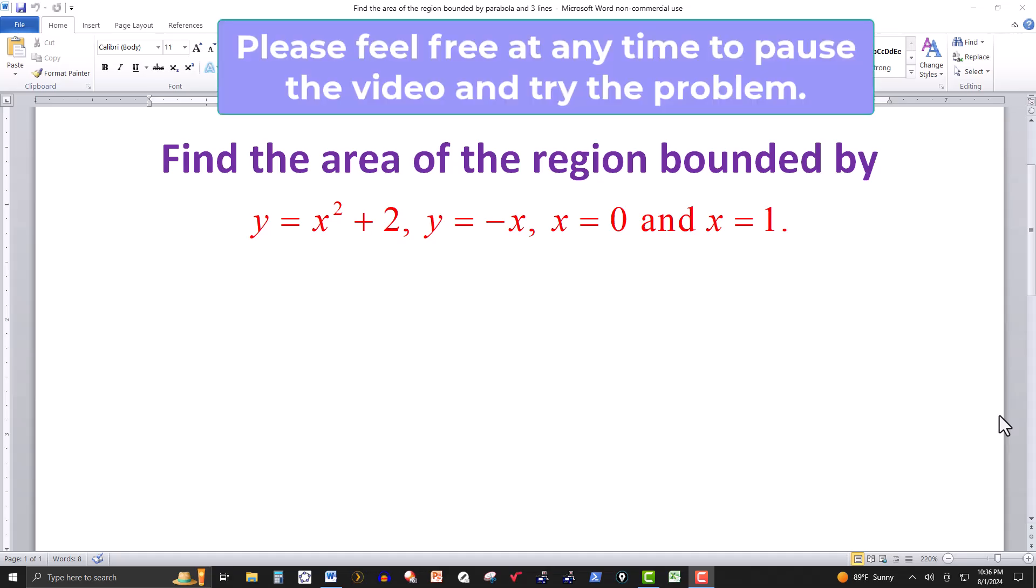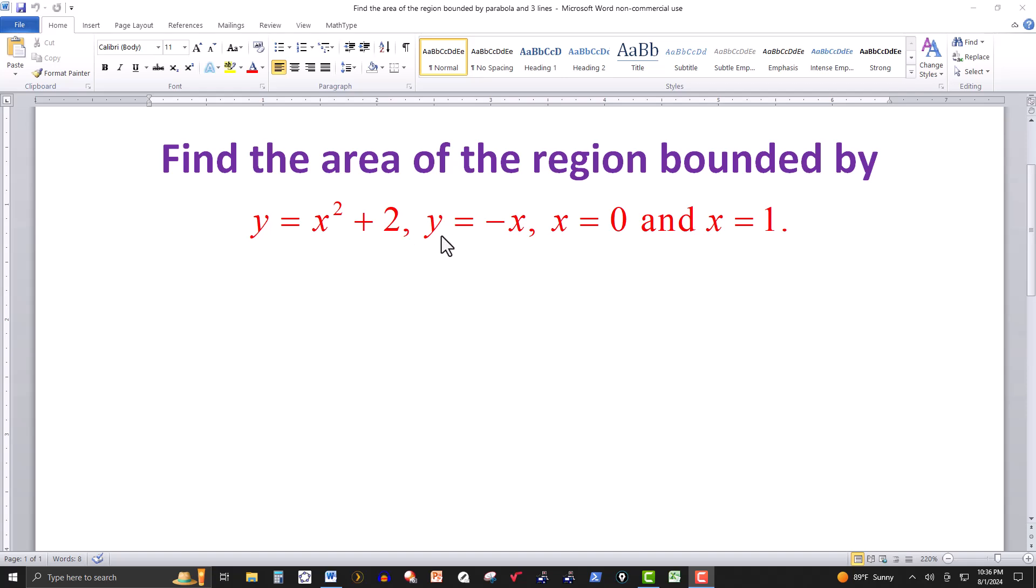In this video, we want to find the area of the region bounded by the parabola y equals x squared plus 2, which has vertex at 0, 2, opens up, the line with negative slope y equals minus x, the vertical line x equals 0, and the vertical line x equals 1.